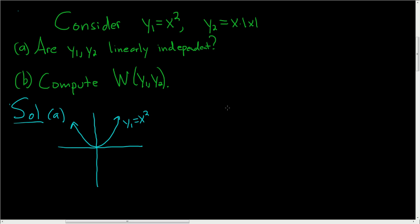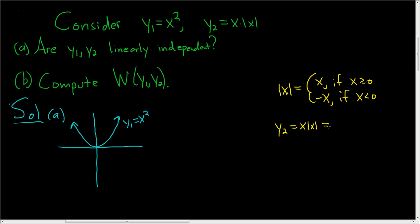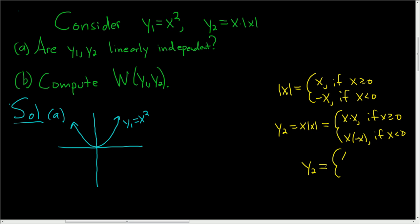Now let's take a look at the graph of x times the absolute value of x. Recall that the absolute value of x equals x if x is greater than or equal to 0, and equals negative x if x is less than 0. So in our case, y2 is equal to x times the absolute value of x. This is a piecewise function: x times x if x is greater than or equal to 0, and x times negative x if x is less than 0. So y2 equals x squared if x is greater than or equal to 0, and negative x squared if x is less than 0.